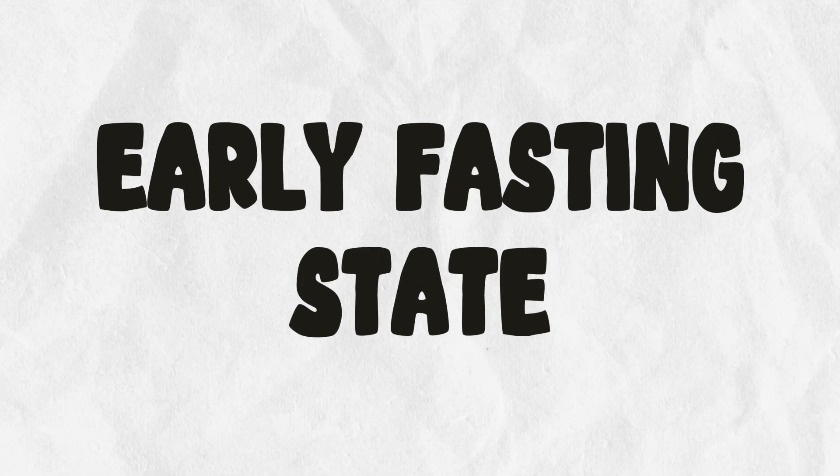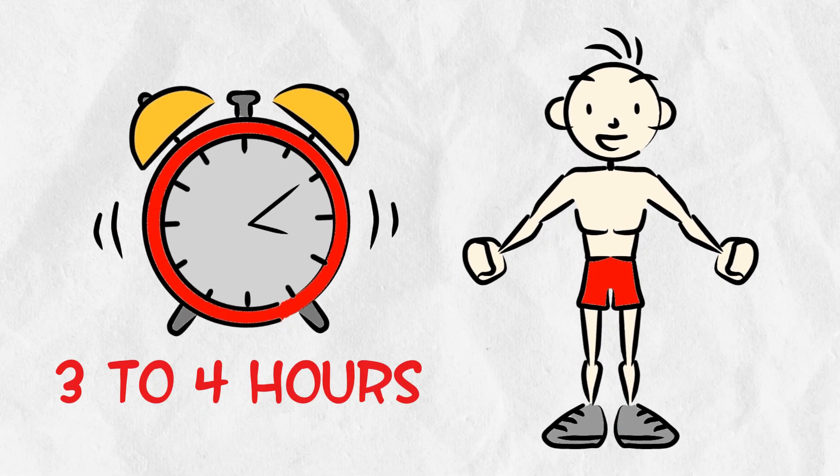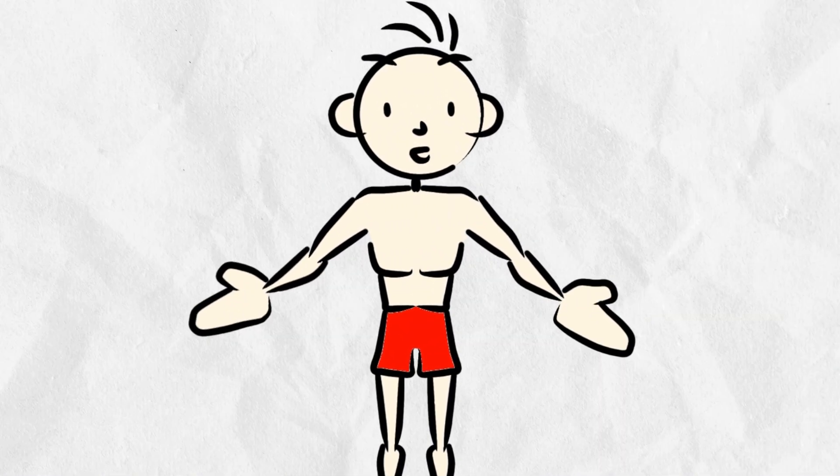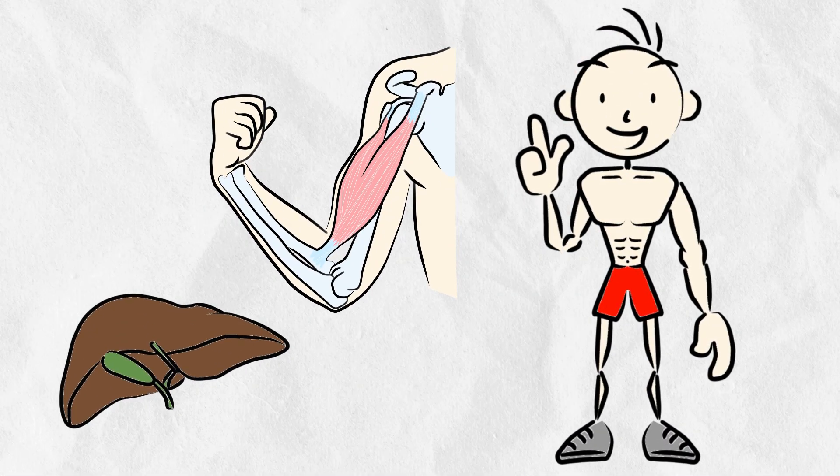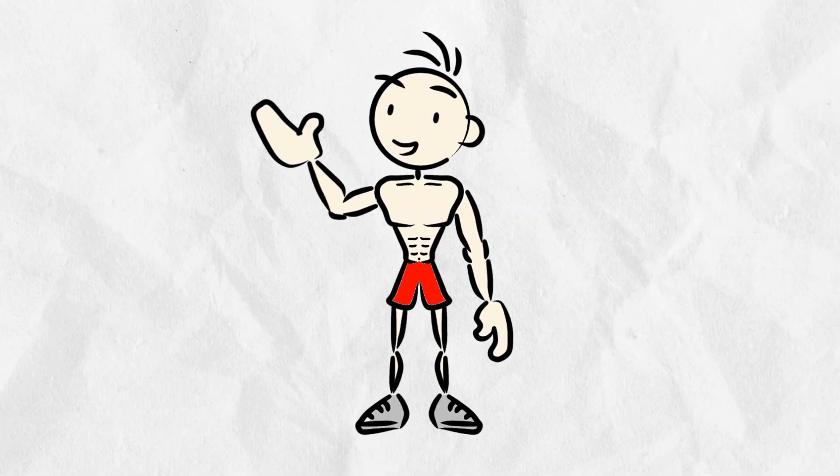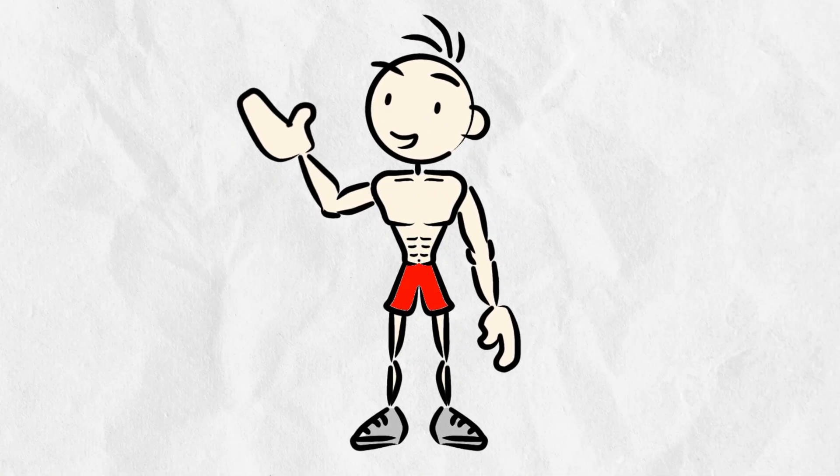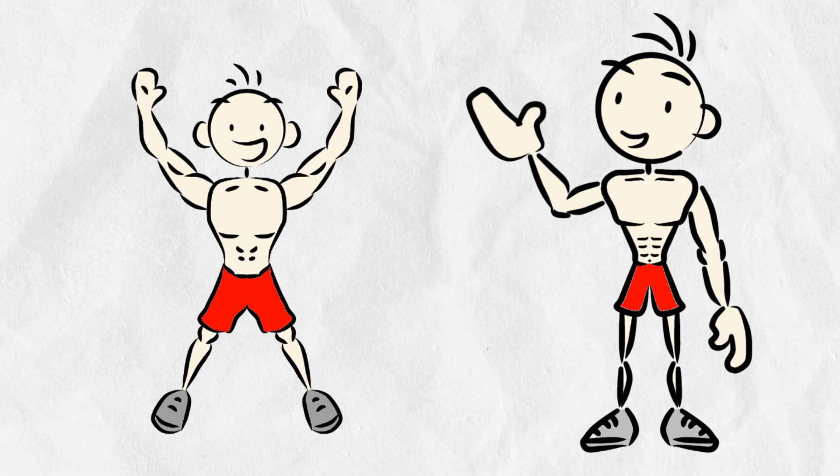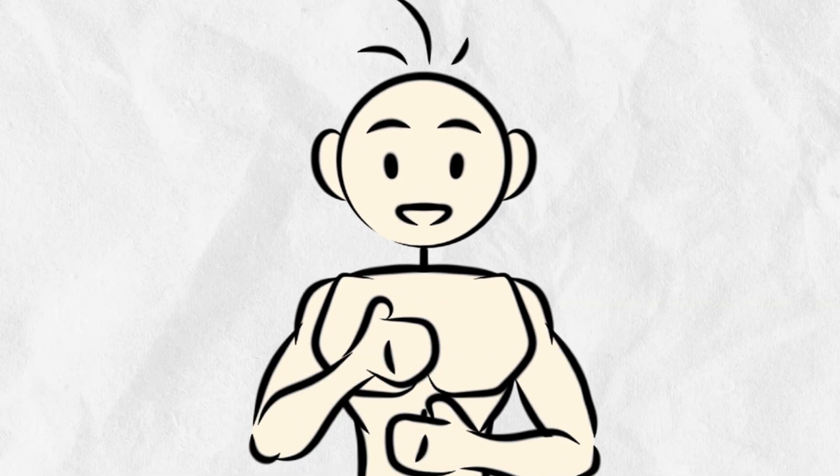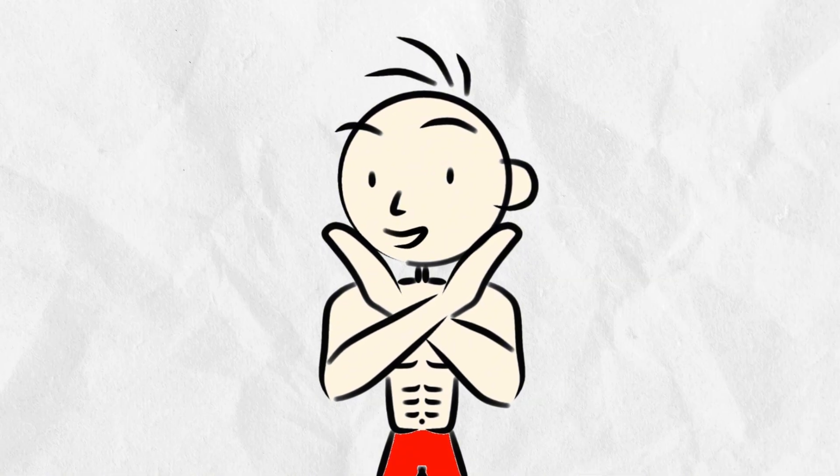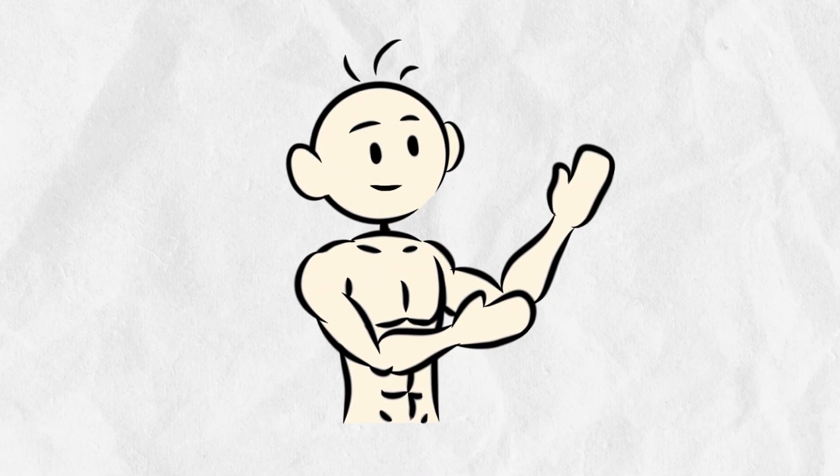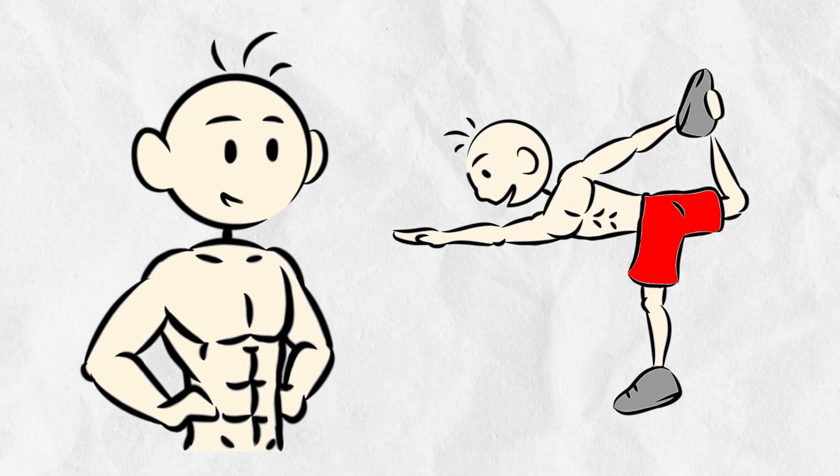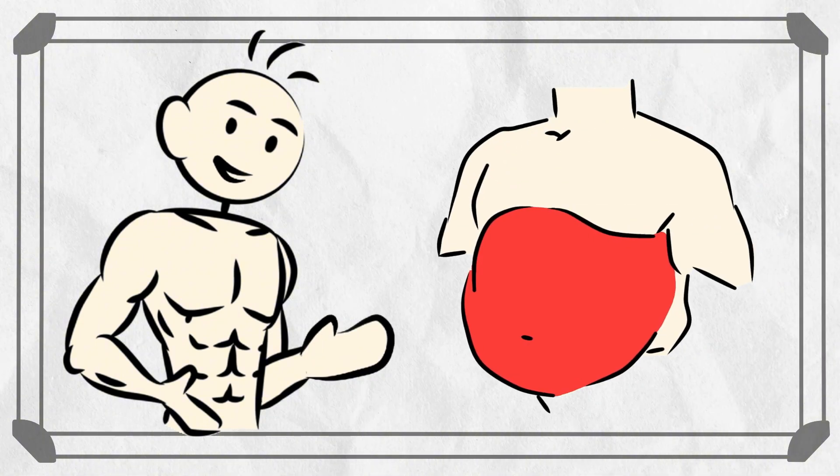Early fasting state, the calm before the fat-burning storm. About three to four hours after your last meal, you enter the early fasting state. No more new food is coming in, so your insulin and blood sugar levels start to drop. Now, your body begins dipping into its glycogen stores for energy. Think of it like grabbing leftovers from the fridge. You're still in relatively comfortable territory here, relying on energy you've already stored. Your body is sort of in a waiting mode, seeing if food will come soon. It's not in full fat-burning mode yet, but it's preparing for that shift, like a runner doing stretches before a marathon. This phase is your body's way of easing into fasting, like warming up before a workout.